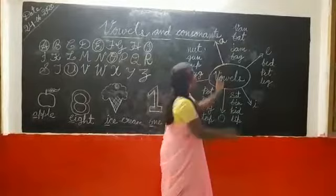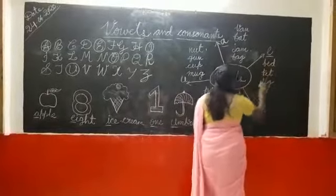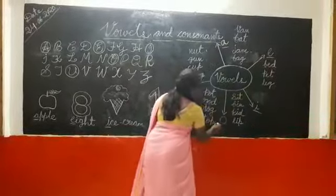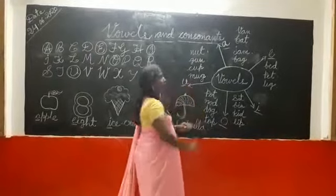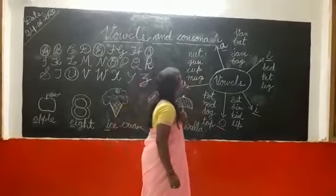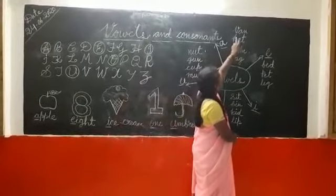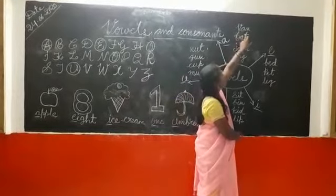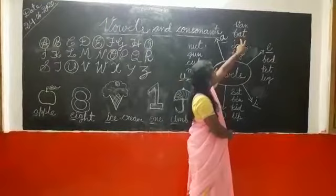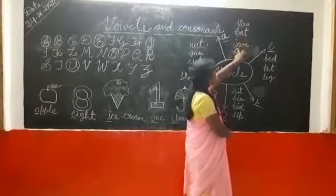How many vowels are here? A, E, I, O, U. Five vowels. Yes. Then see some examples are here. V-A-M, vam. B-A-T, bat. J-A-M, jam. B-A-G, bag.